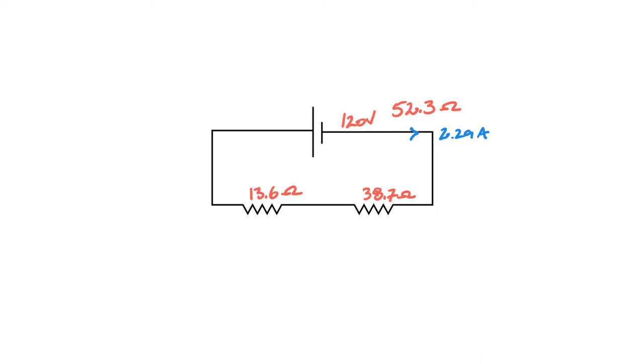So if I do that, 2.29 times 38.7 equals - this voltage here is going to be 88.6 volts. And I do the same thing for the 13.6 ohm resistor: 2.29 times 13.6 equals that will be 31.1 volts.